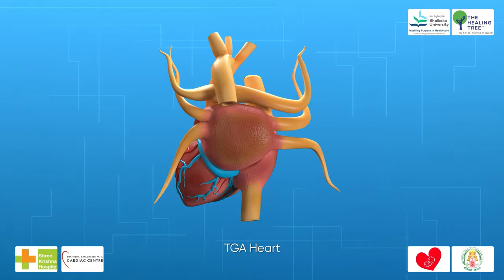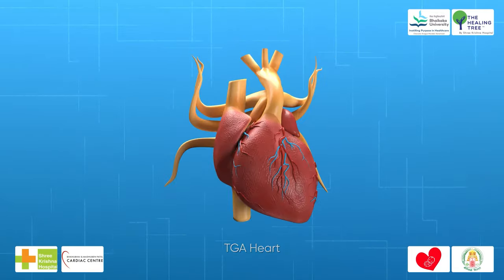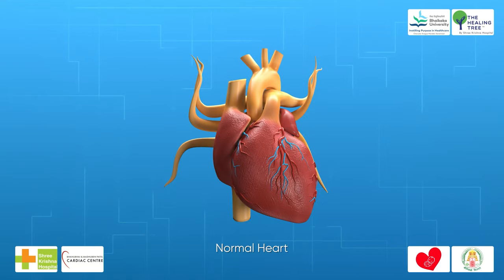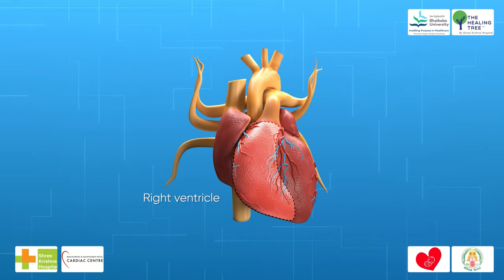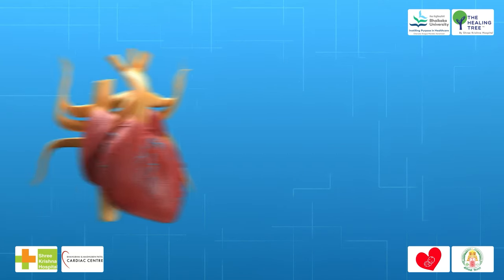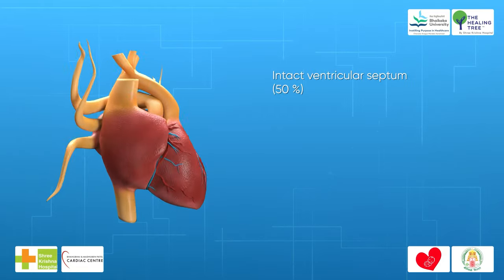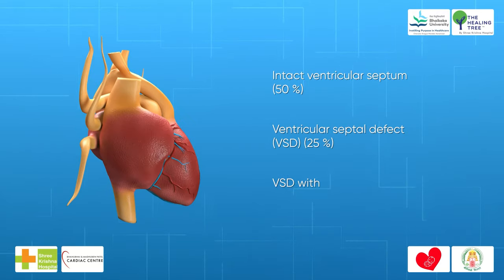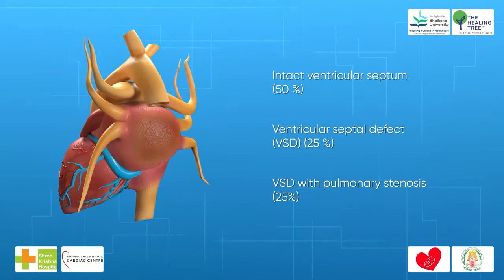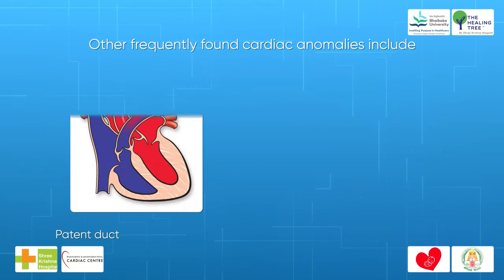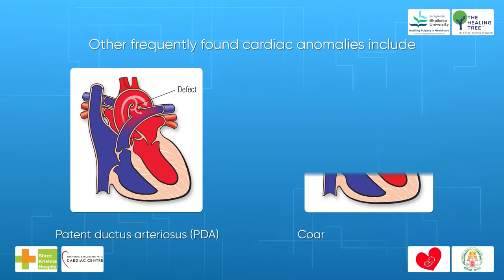Transposition of the great arteries is a congenital defect of the heart in which the anatomic relationship of the great arteries is reversed. Unlike in normal positioning, the aorta arises anterior to the pulmonary artery and from the right ventricle, while the pulmonary artery lies posterior to the aorta and arises from the left ventricle. Patients with TGA are subdivided into those with intact ventricular septum, ventricular septal defect (VSD), and VSD with pulmonary stenosis. Other frequently found cardiac anomalies include patent ductus arteriosus and coarctation of the aorta.